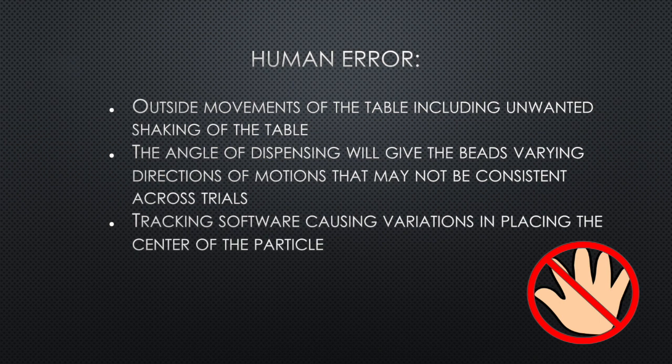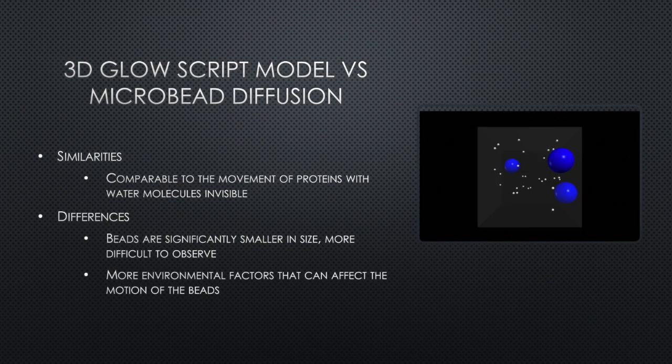Nonetheless, the trends observed can be explained by physics and conservation of momentum. Thus, the trends of each graph should be the focus of the data. We compared the experimental results and representations to the GlowScript model that we did in class to represent motions of larger proteins and smaller molecules. There are many similarities between the visualization of the program and the experiment, including the movement of the large proteins from the collisions of smaller molecules. This is in parallel with the experiment as the microbeads moved due to smaller molecules of the solvent colliding with them. This program helps visualize what was actually happening to the microbeads as the smaller solvent molecules are not visible.